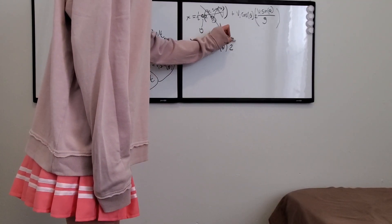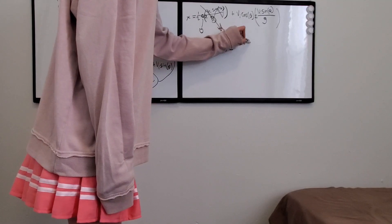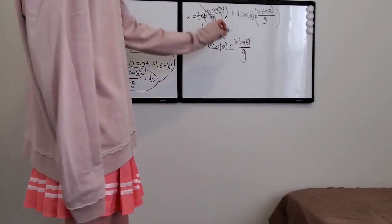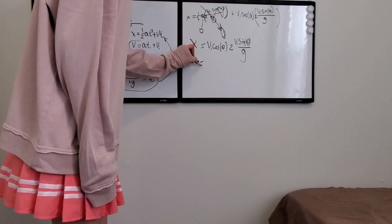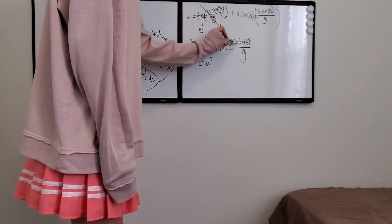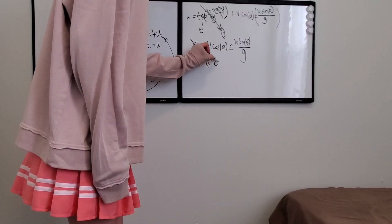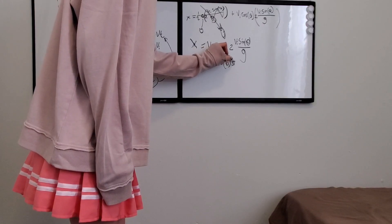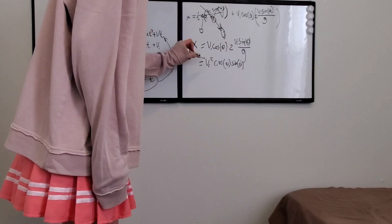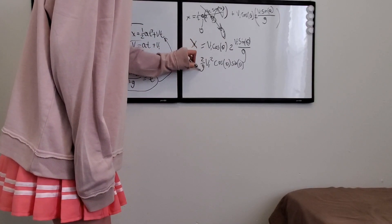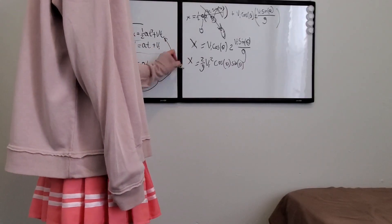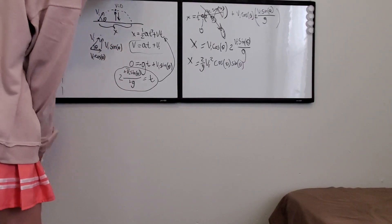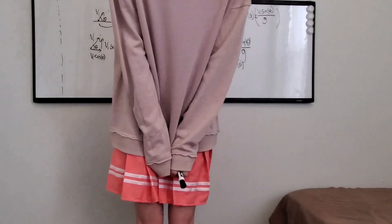You can simplify this a little bit by combining the velocity initials into velocity initial squared, putting the cosine and sine together, and putting two over g out front. And that is how far it goes — that is the general solution. Thanks for watching. Bye.